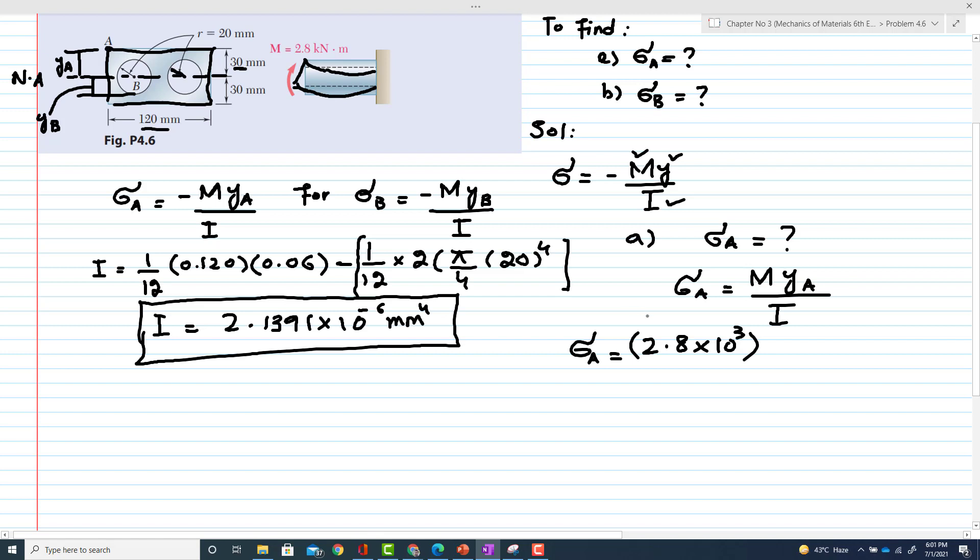So this is YA, which equals 0.03 meters, divided by I, which is 2.139 × 10⁻⁶. I forgot to put the minus sign. As Y is positive, σA will be equal to -39.3 MPa.